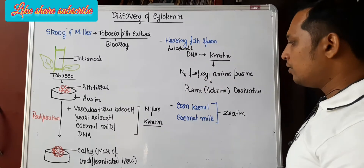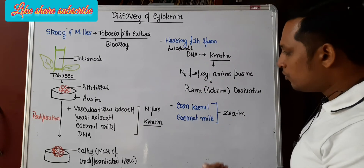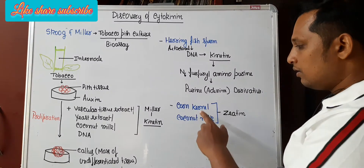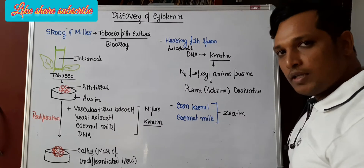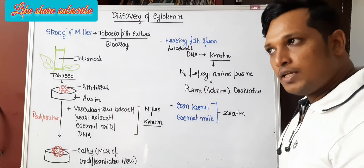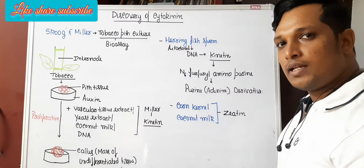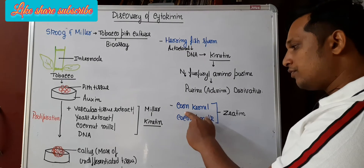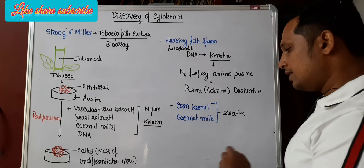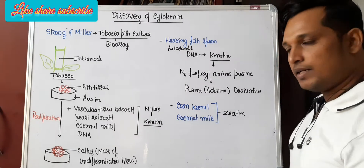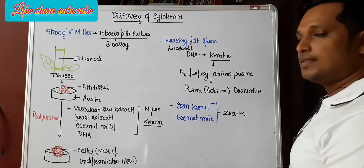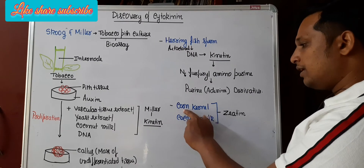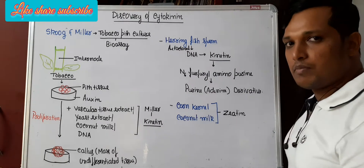Kinetin was found to be an aminopurine derivative — specifically N6-furfuryl aminopurine, which is an adenine derivative. Later on, they were able to isolate the first cytokinin from a plant source, from corn kernel and coconut milk. It was named zeatin.